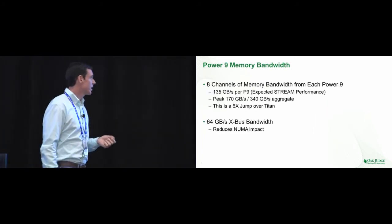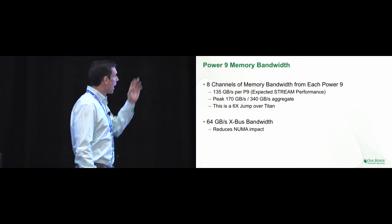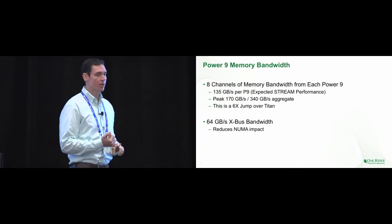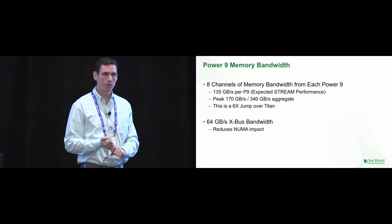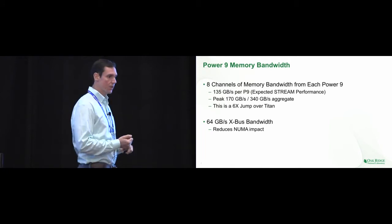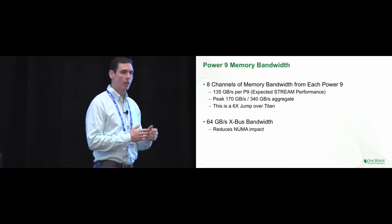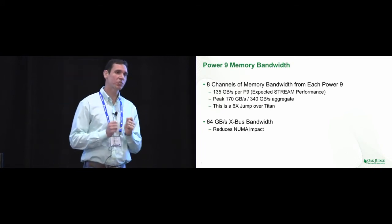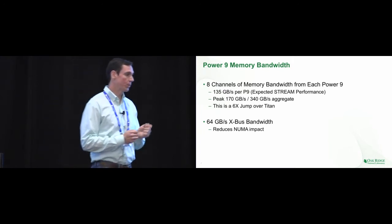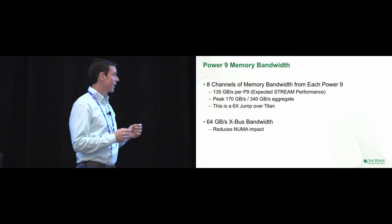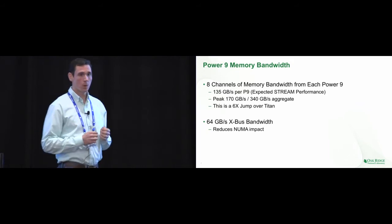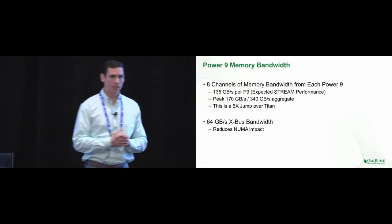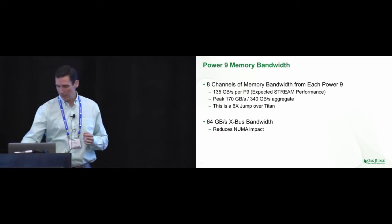Memory bandwidth is going to come from eight channels. The Power architecture is one of the first to get this out there — we're starting to see it in ARM systems as well, but coupled with the Power9 processor it's still the more attractive system. The measured stream benchmark performance is 135 gigabytes per second per socket, but the actual theoretical DRAM performance is 170 gigabytes per second per socket, for an aggregate from both sockets of 340 gigabytes per second — a 6x jump over Titan. There's also a traditional SMP bus between the two sockets at 64 gigabytes per second, which we're hoping will reduce NUMA impacts on the system.